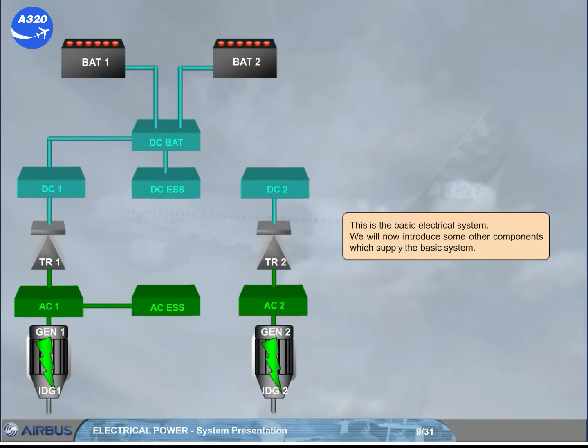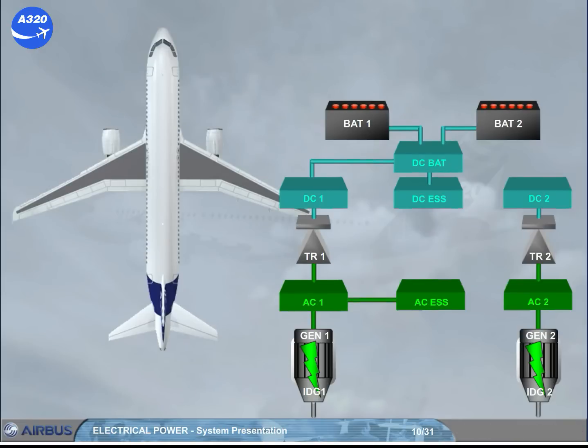This is the basic electrical system. We will now introduce some other components which supply the basic system. The electrical network can also be supplied by the APU generator.